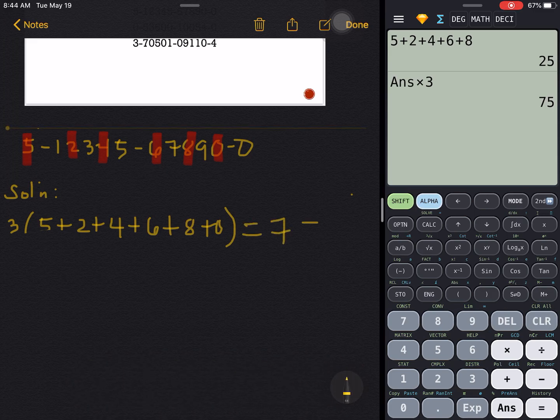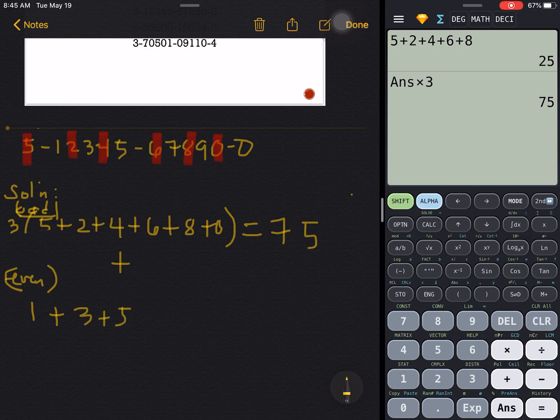So the answer or the sum inside the parenthesis would be 25, but it has to be multiplied by three, so of course the answer is 75. This would be equals 75. That would be for odd positions.